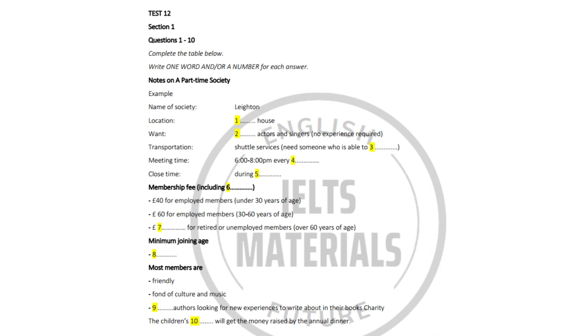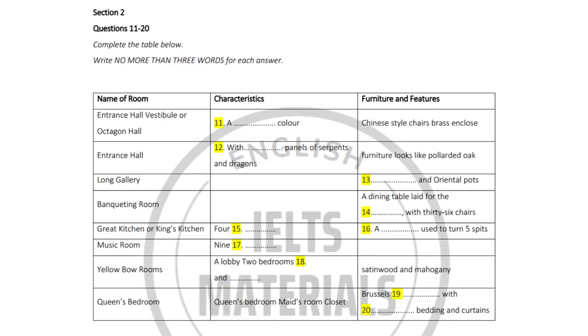Now turn to Section 2. Welcome to the Royal Pavilion, a magnificent palace and popular tourist attraction in Brighton. We are now in the Entrance Hall vestibule or Octagon Hall, a gorgeous room in peach blossom color. As you can see, it is octagonal shaped, and it was originally furnished with fret pattern chairs in Chinese style and a brass enclosed stove which provides a warm welcome to us all. Let us move on to the Entrance Hall. Unlike the Octagon Hall, this room is square shaped. You can see panels of serpents and dragons on a green pale wall and these pieces of wooden furniture resemble pollarded oak. We are now going to the Long Gallery and this corridor is named after the 16th-century house galleries where paintings were displayed. It is furnished with bamboo pattern cabinets and oriental jars.